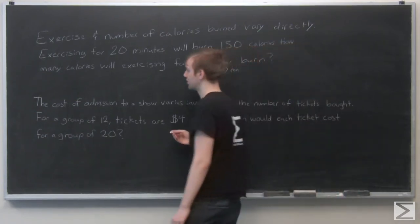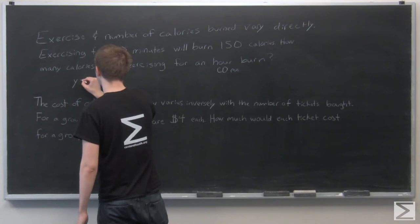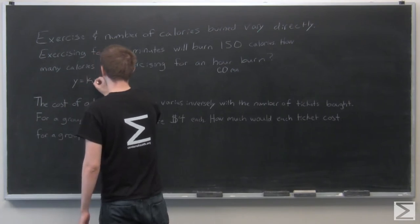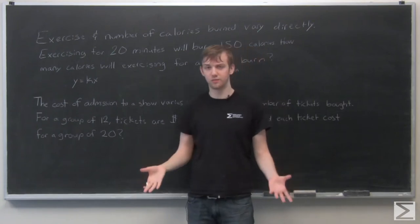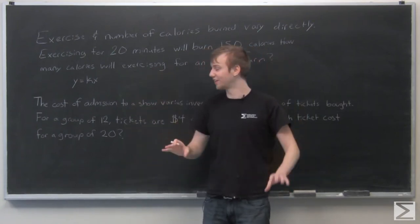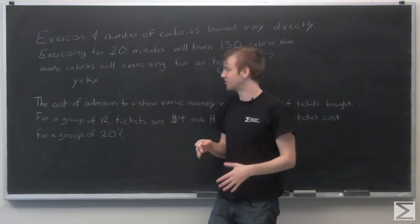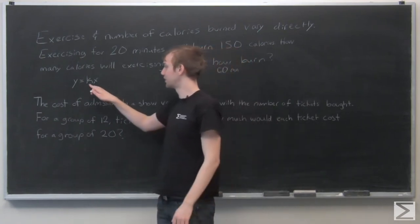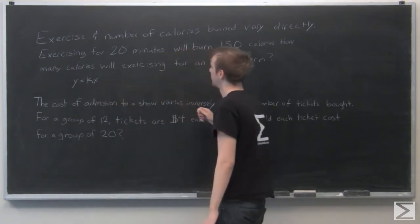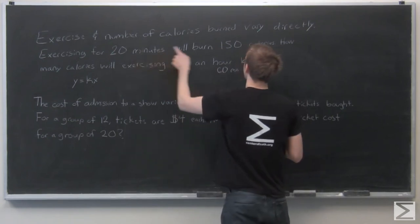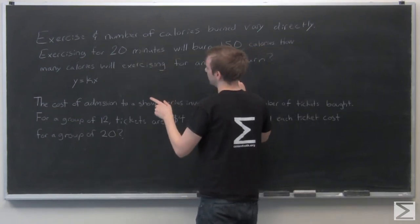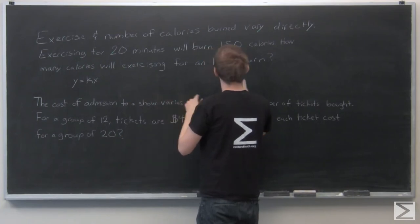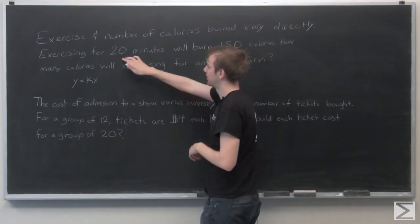So since we're dealing with direct variation, we'll write down our formula, Y equals KX. And we have two quantities, minutes spent exercising and calories, and they're both increasing and decreasing in relationship to each other. So what we want to solve for is what this value of K is. So we're given, for 20 minutes, we burn 150 calories. So let's plug those in. And let's call number of calories burned Y and minutes X.